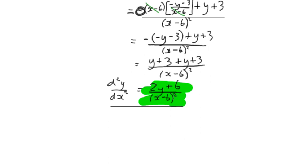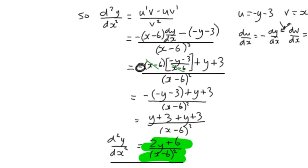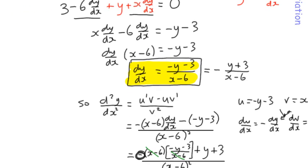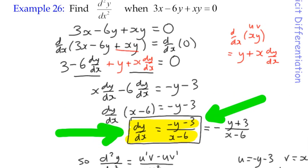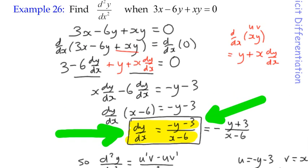We had a reasonably straightforward rational function to deal with and could use the quotient rule. But sometimes the derivatives, once you rearrange them, are a bit awkward and you might want to avoid that. So I'm going to show you how to find the second derivative in a different way. Instead of differentiating the final dy by dx expression, we go back to the intermediate stage before rearranging — back to when it was still in one big line.